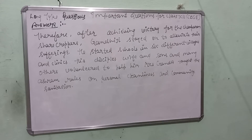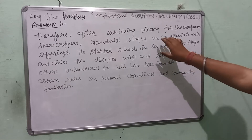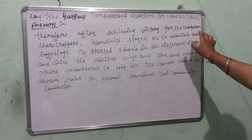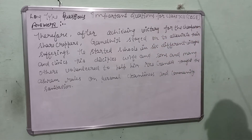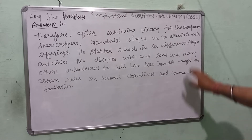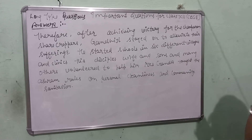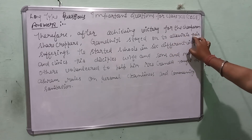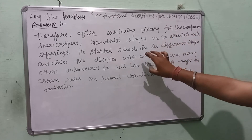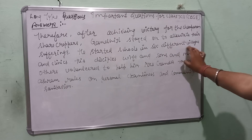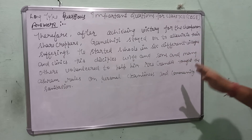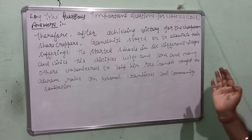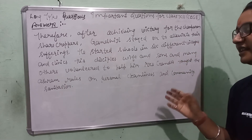After achieving victory for the Champaran sharecroppers, Gandhi stayed on to alleviate their sufferings. He started schools and clinics in six different villages.